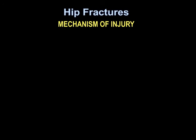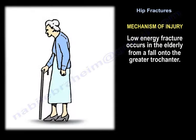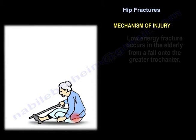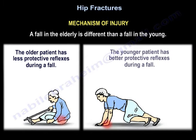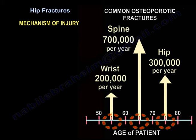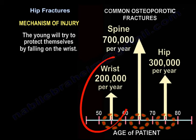The mechanism of injury: low energy fractures occur in the elderly from a fall into the greater trochanter. The fall in the elderly is different than a fall in the young. Wrist fractures occur in a younger group than the hip — wrist fractures, followed by spine fractures, followed by hip fractures — so the young will try to protect themselves by falling on the wrist.